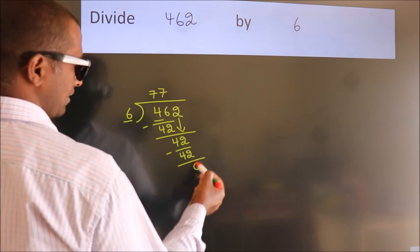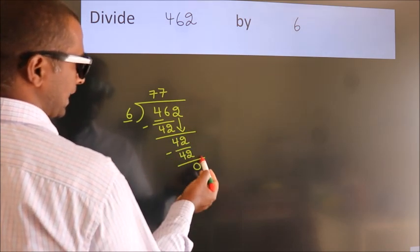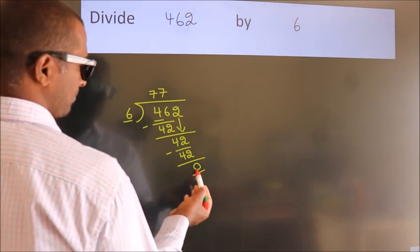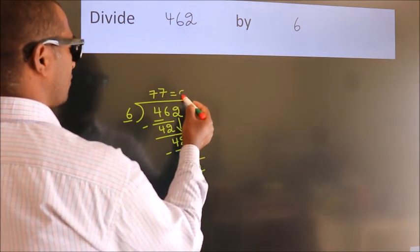After this no more numbers to bring it down. And we got remainder 0. So this is our quotient.